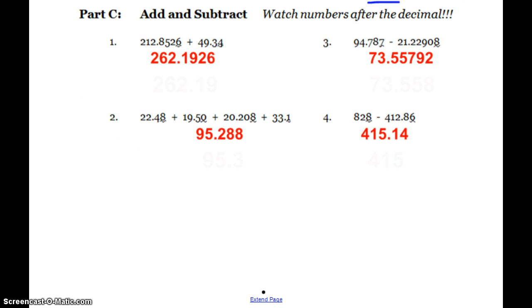Now when adding and subtracting, you have to watch the numbers after the decimal. Your answer matches the measurement with the least amount of numbers after the decimal. And I tried to put a little squiggly line to indicate that number. So here we have 212.8526 tenths, hundredths, thousandths, ten thousandths, plus 49.34 tenths, hundredths. So my answer can only go to the hundredths, because that is my least accurate measurement. So I can't add those numbers together and report an answer all the way to the ten thousandths, because that's just not right based on the measurements that I'm adding together. So again, see if you can round those answers off appropriately based on sig figs, pause the video, and then check your work.